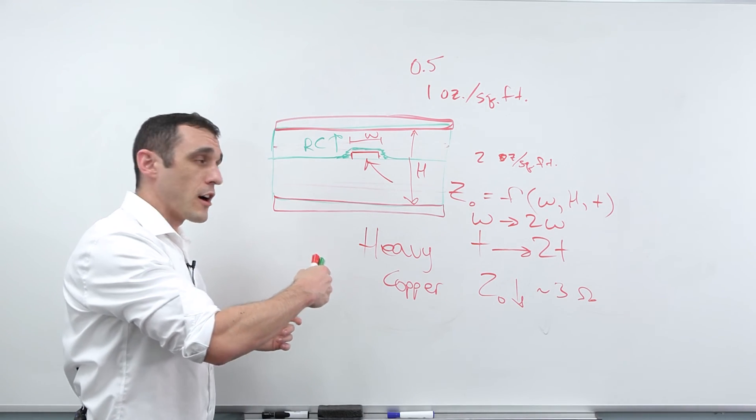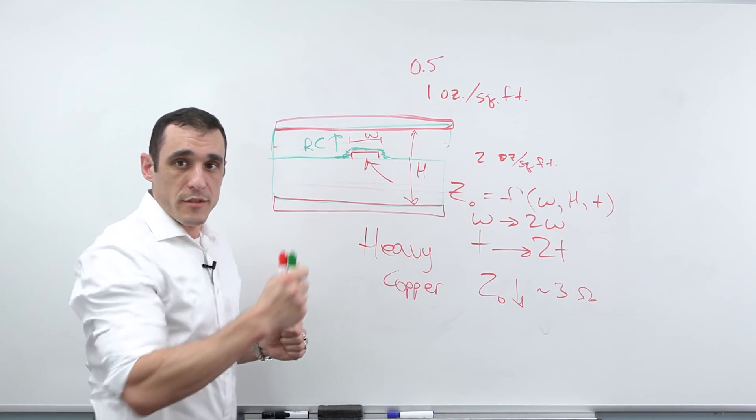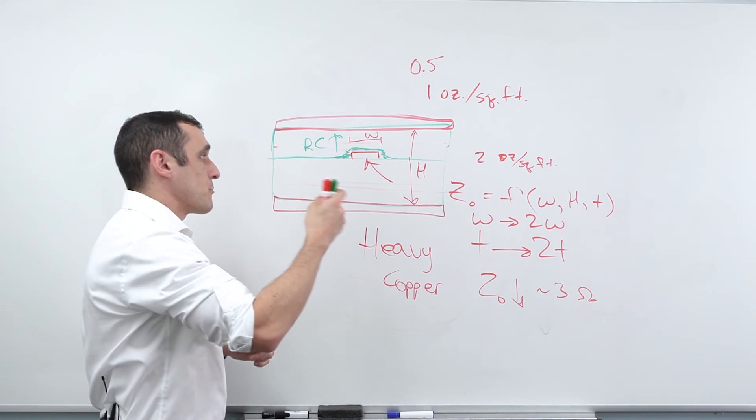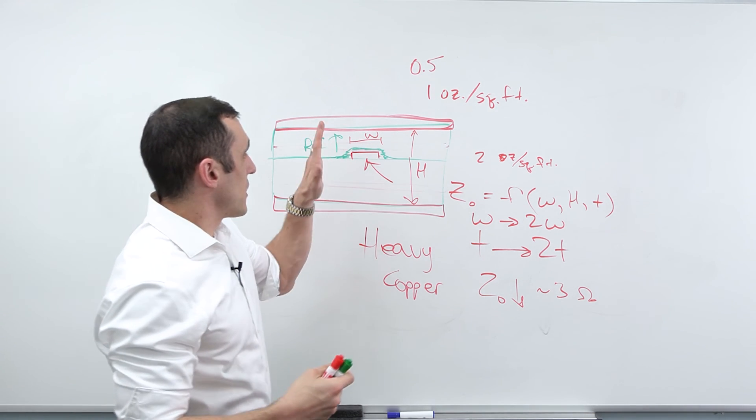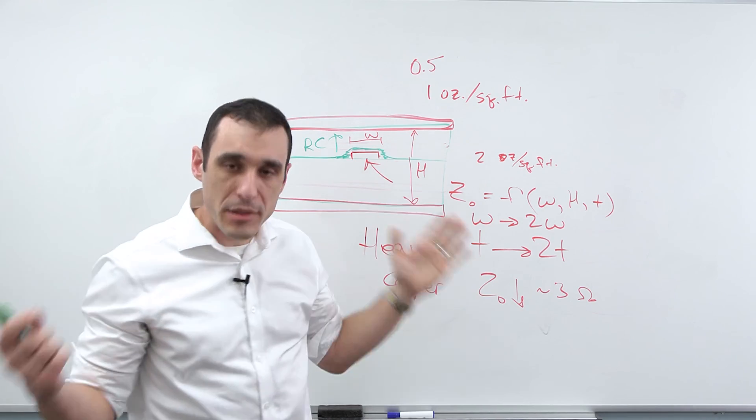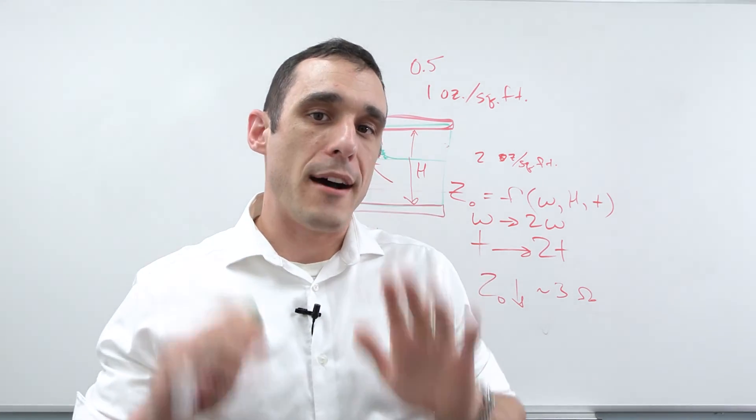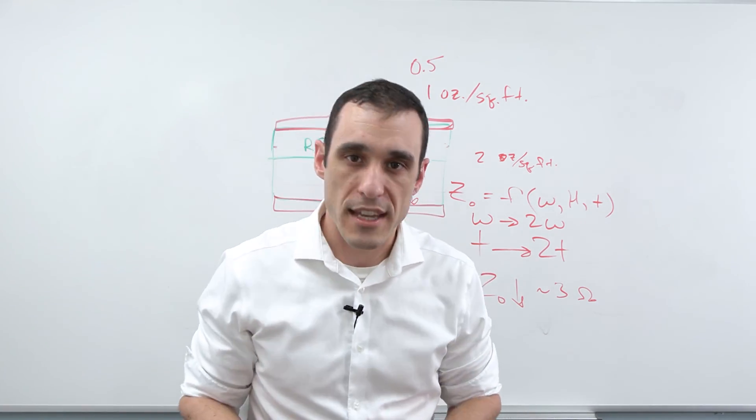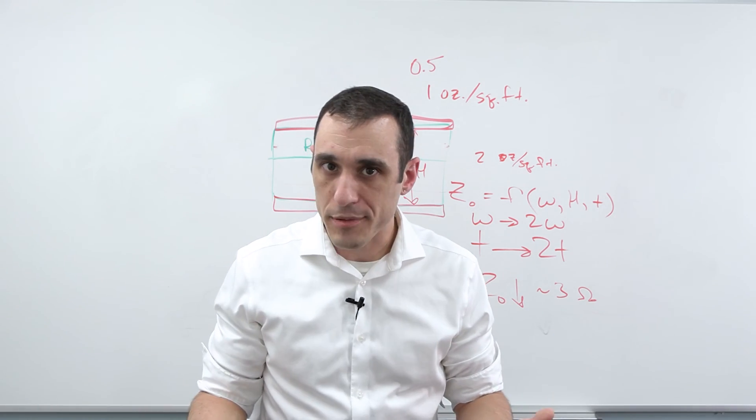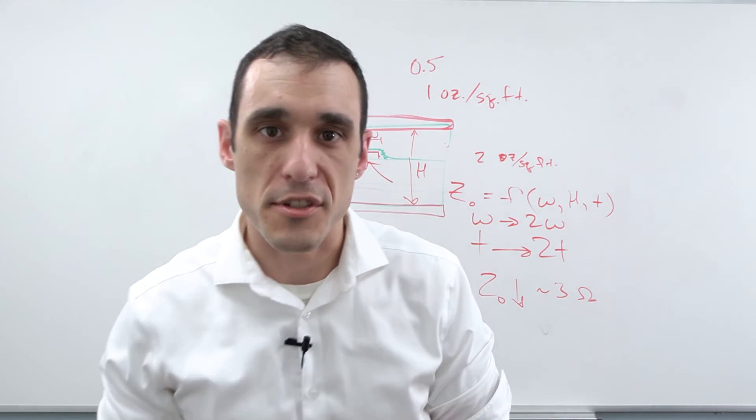Some of the stuff that we've been talking about so far with the IPC-2152 Nomograph, that particular table was developed for traces. So what about planes? So we'll come back and we'll talk about planes and how much current they can carry and how to work with power planes in an upcoming video. So stay tuned.